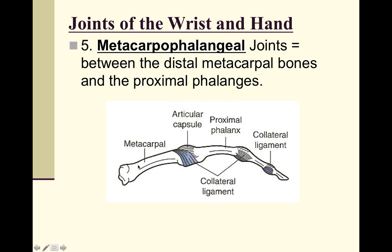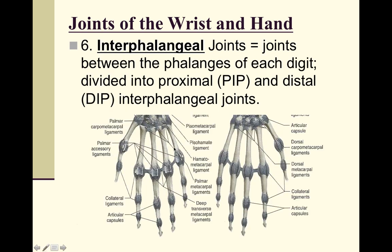The metacarpophalangeal joint — usually abbreviated MCP — is between the metacarpal and the proximal phalanx. The interphalangeal joints include one in the thumb and, in the fingers, the proximal interphalangeal (PIP) and distal interphalangeal (DIP) joints. Images are provided to help visualize how all these joints work in the hand.